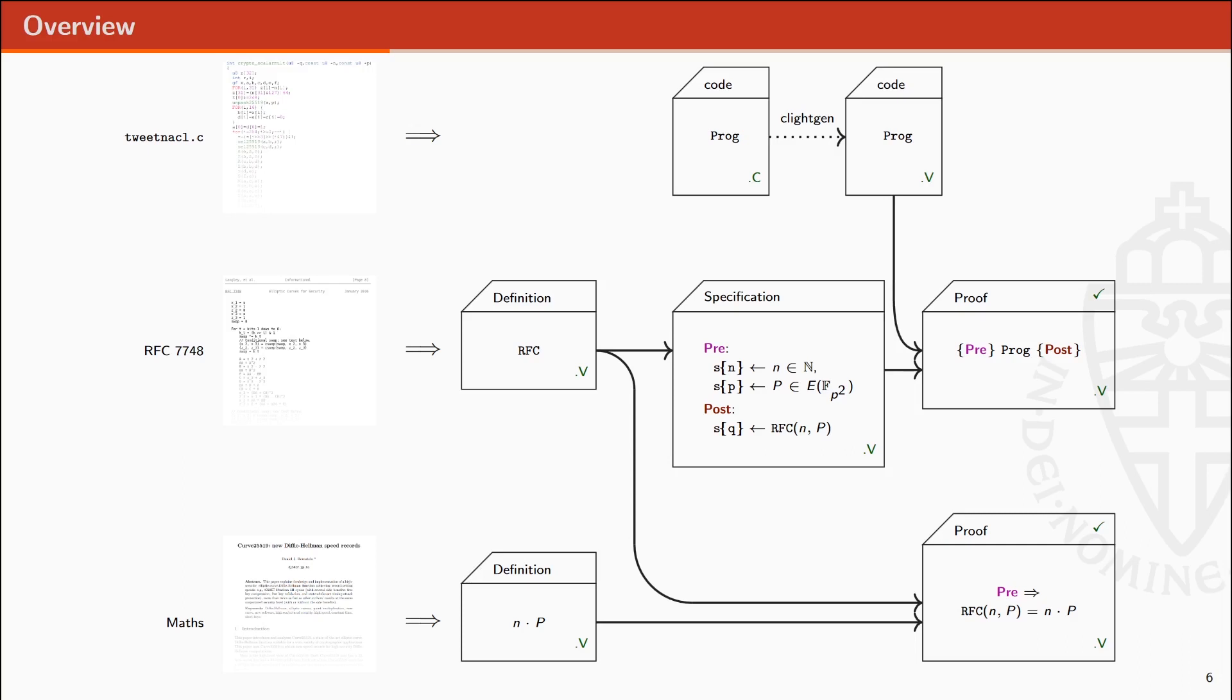Here is the big picture of our proof. We formalize the RFC. We prove that TweetNaCl correctly implements the RFC. We formalize Montgomery elliptic curves and formally verify Bernstein's paper. Finally, we prove that RFC matches X25519 from Bernstein's paper. By composition, we have a complete link from the TweetNaCl code up to the math theory of elliptic curves.